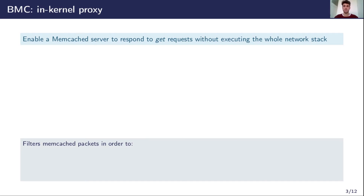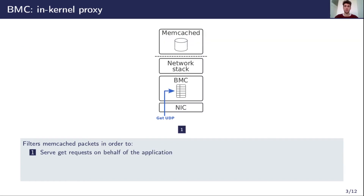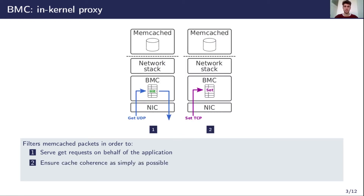BMC uses this pre-stack processing approach for Memcached with a proxy and a kernel cache. The proxy is responsible for filtering received packets to process only Memcached requests. When a get request on a data item is received, the BMC cache is accessed. In case of a cache hit, the cache is used to answer the request instead of the application. Set requests over TCP are also filtered by BMC. However, we chose not to update the BMC cache with set requests because it can cause cache coherence issues.